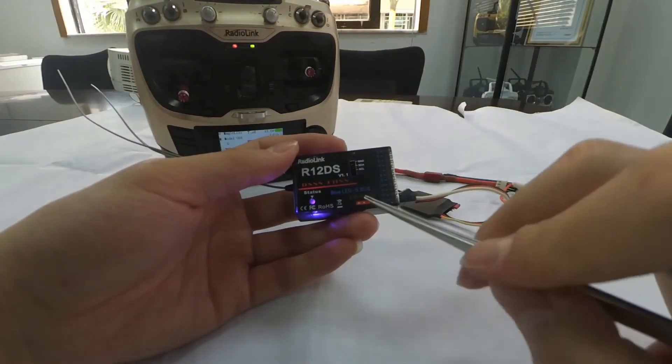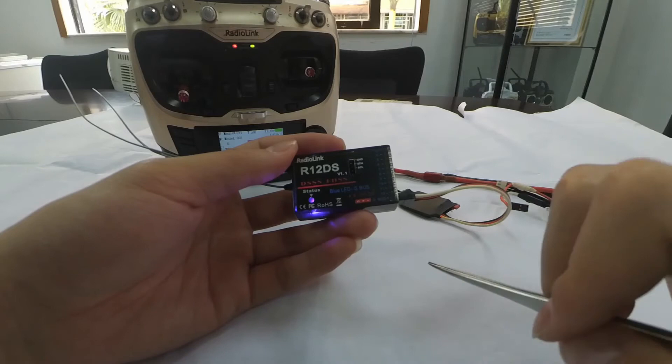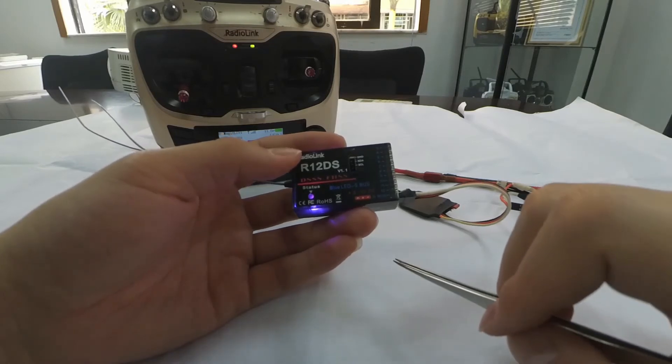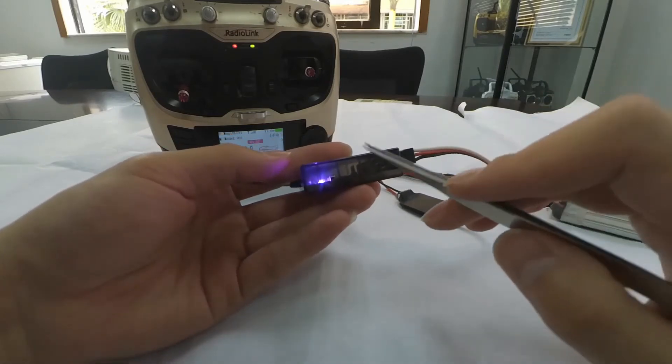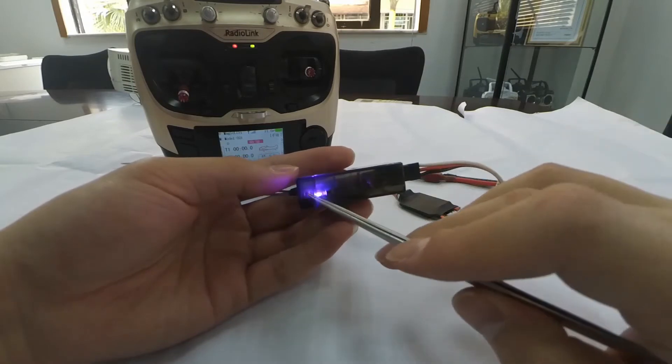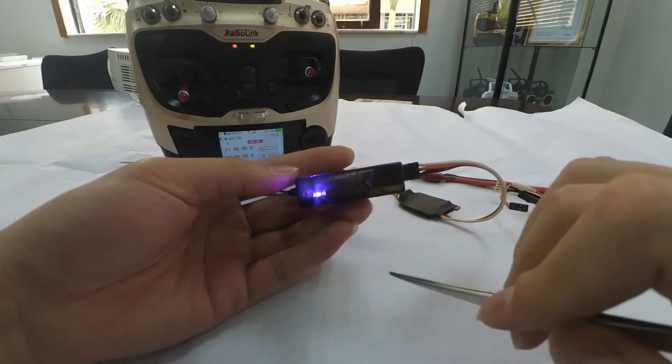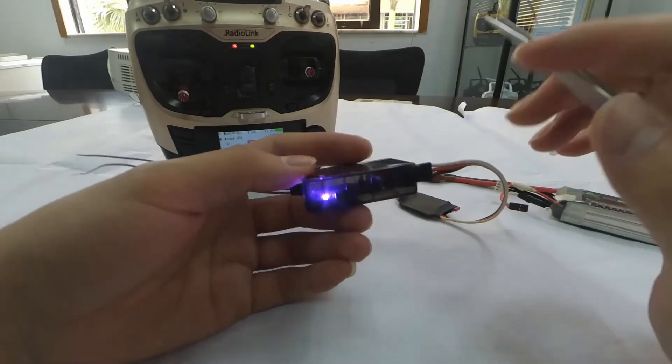There are totally two signal outputs for R12DS, S-plus or PWM. We can see that the current LED color is blue and purple, meaning its current signal output is S-plus.